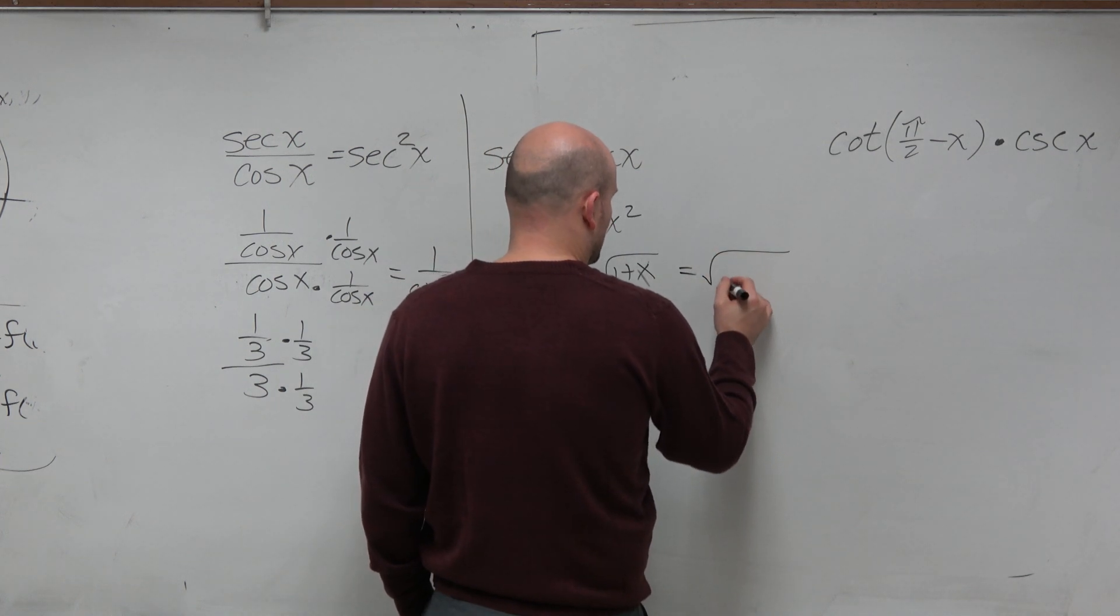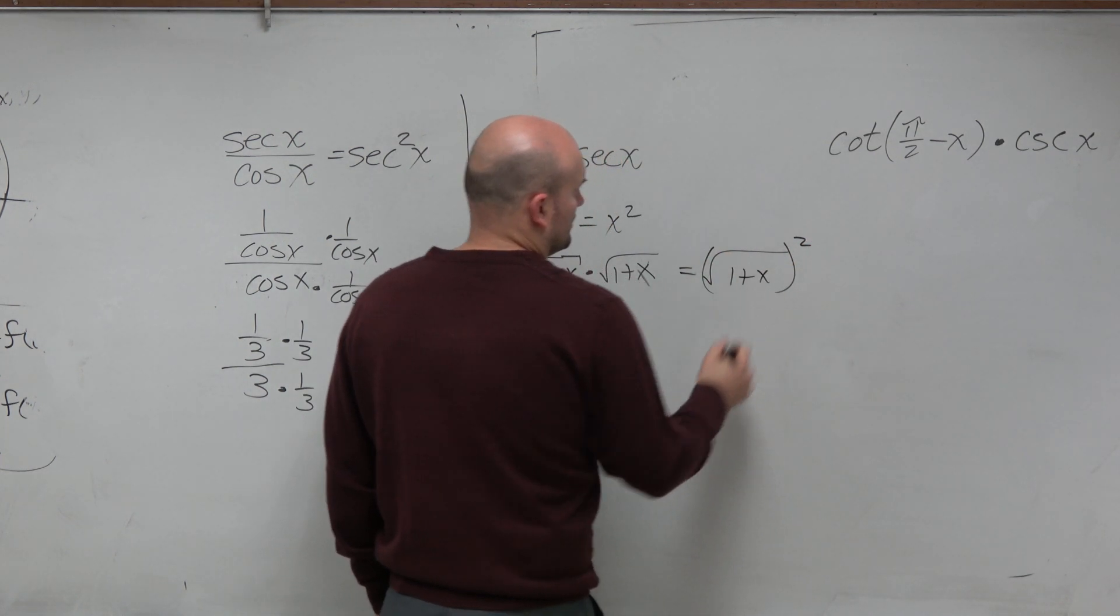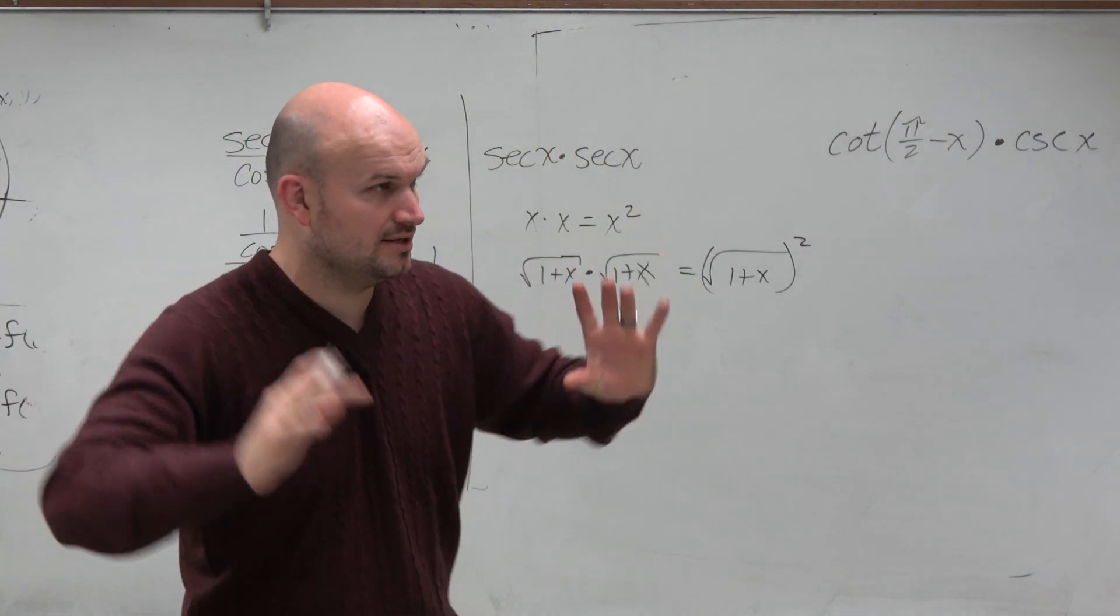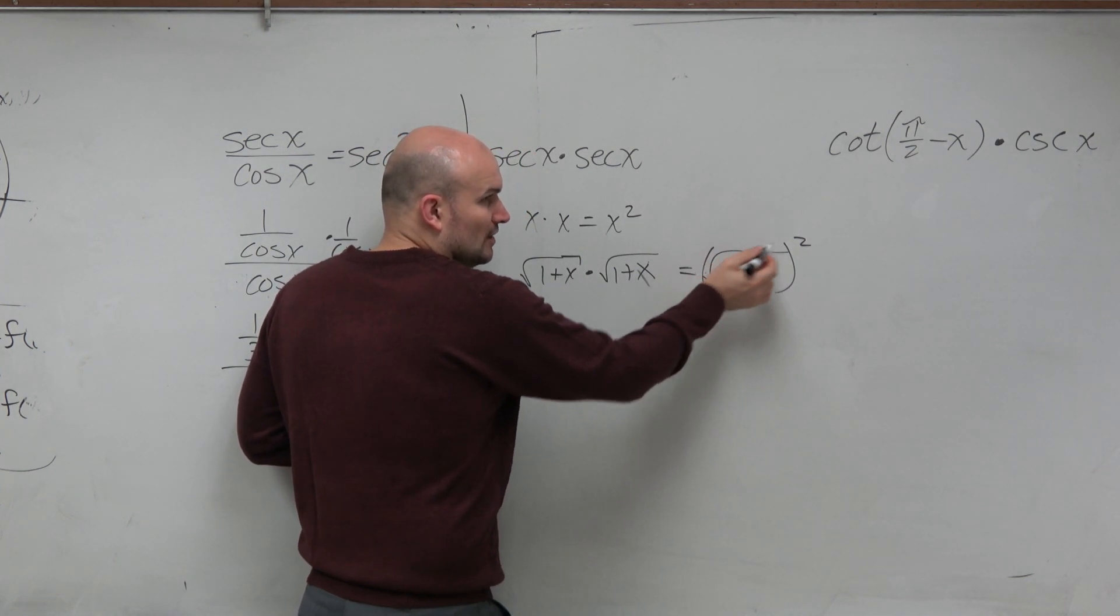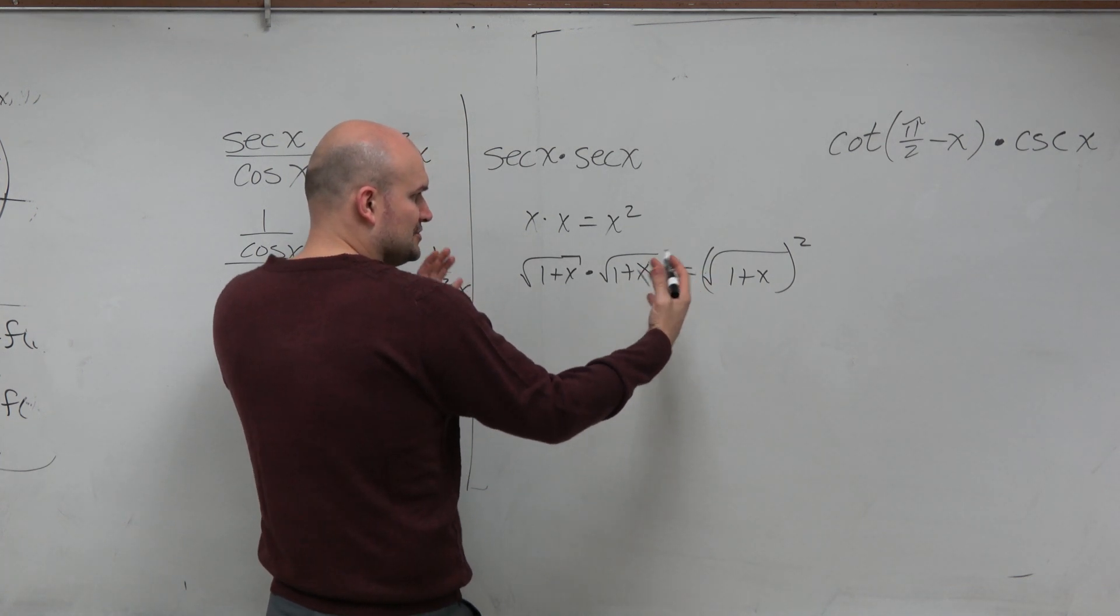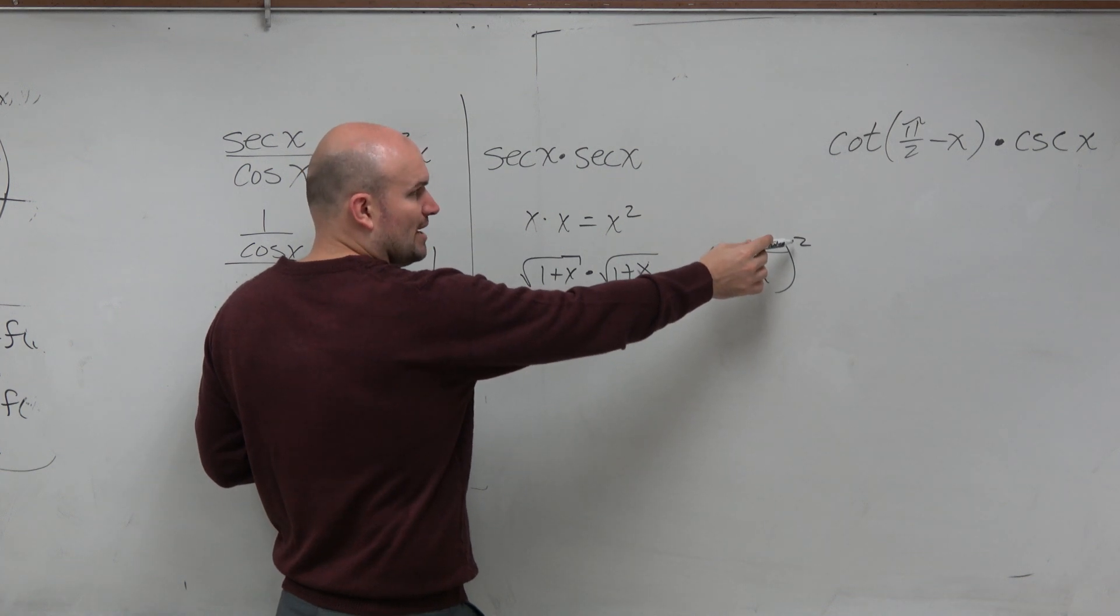But what's happening is your function is being squared. You have two of those square roots, right? And that's why the radical and the squaring are inverse operations. They undo each other, right? So really what's happening is these square roots is being squared.